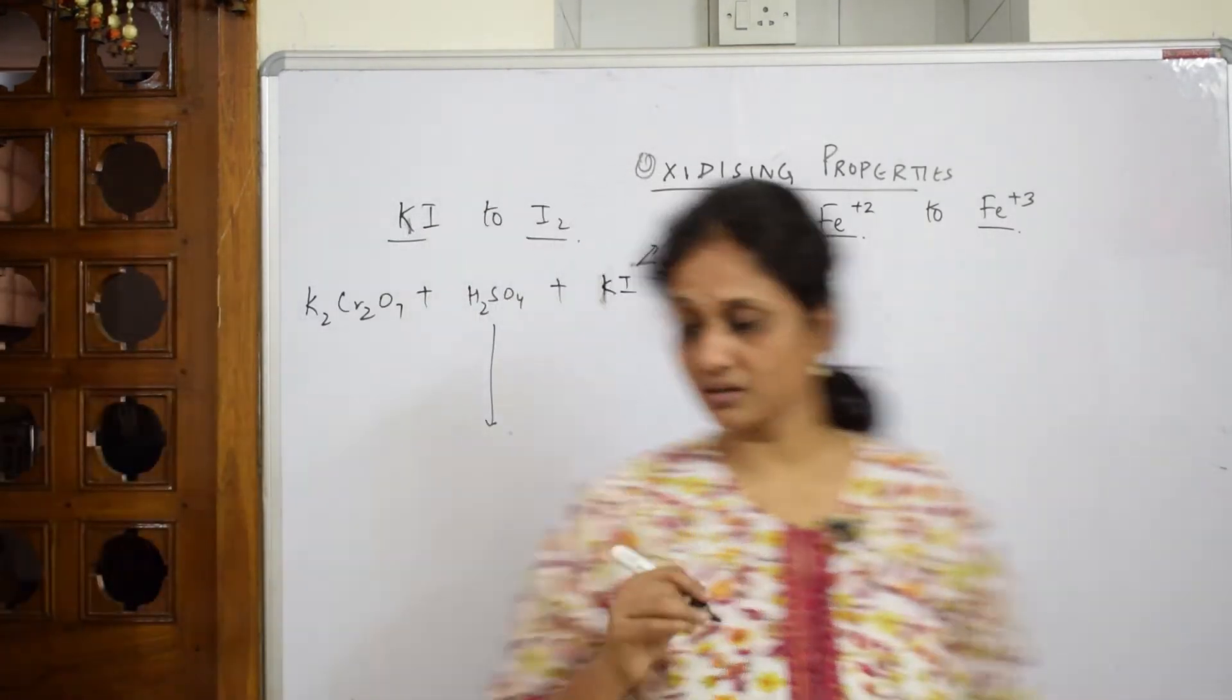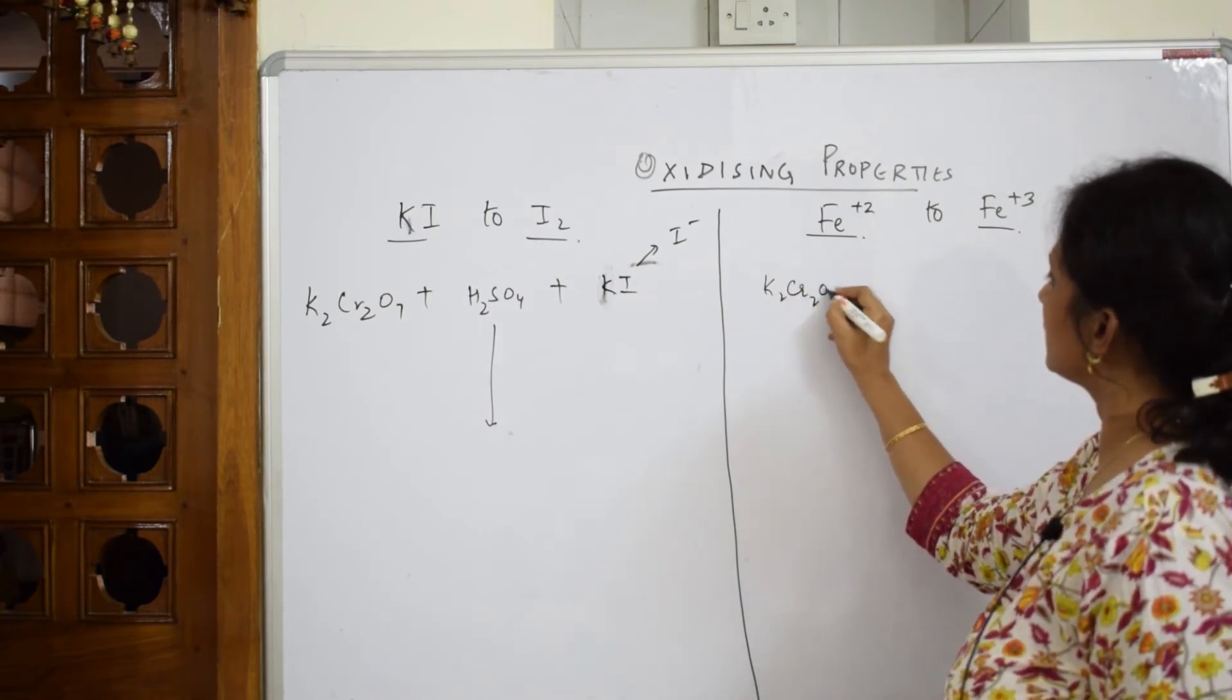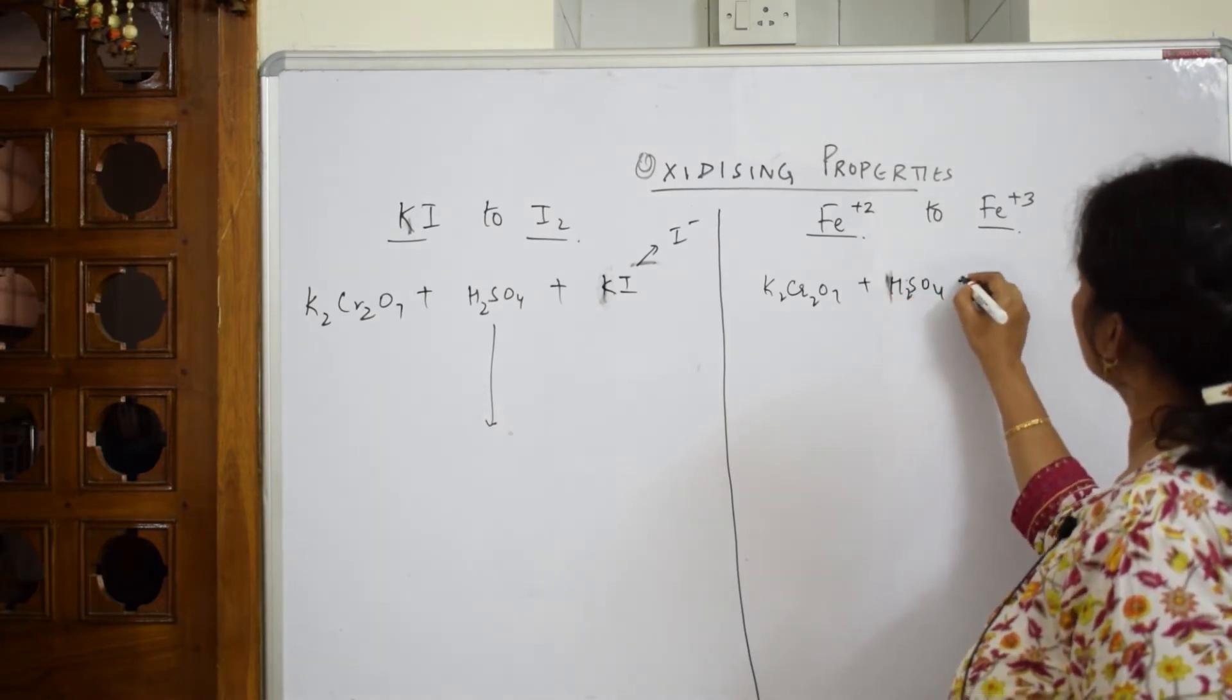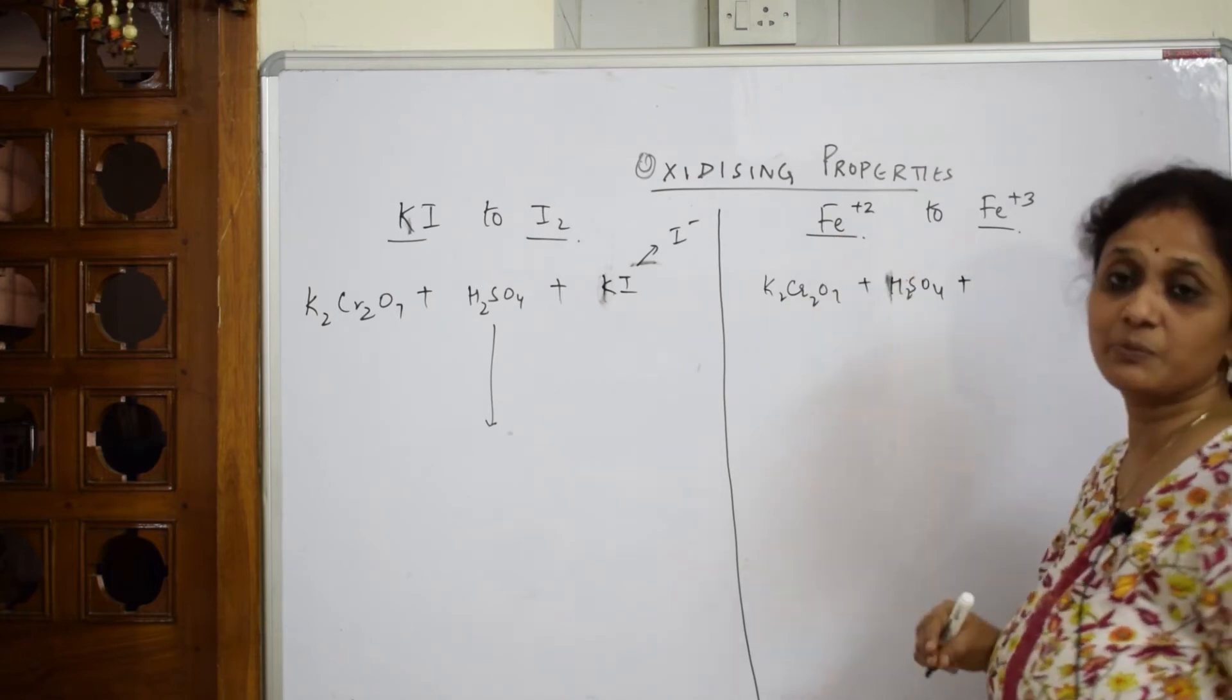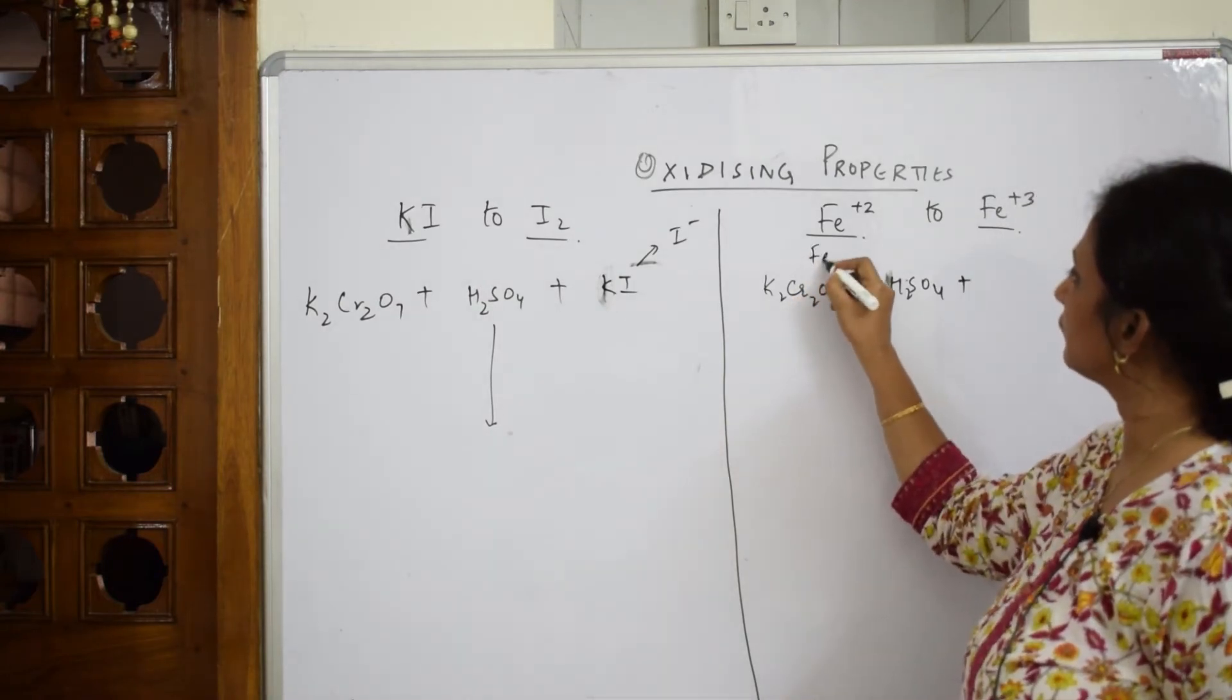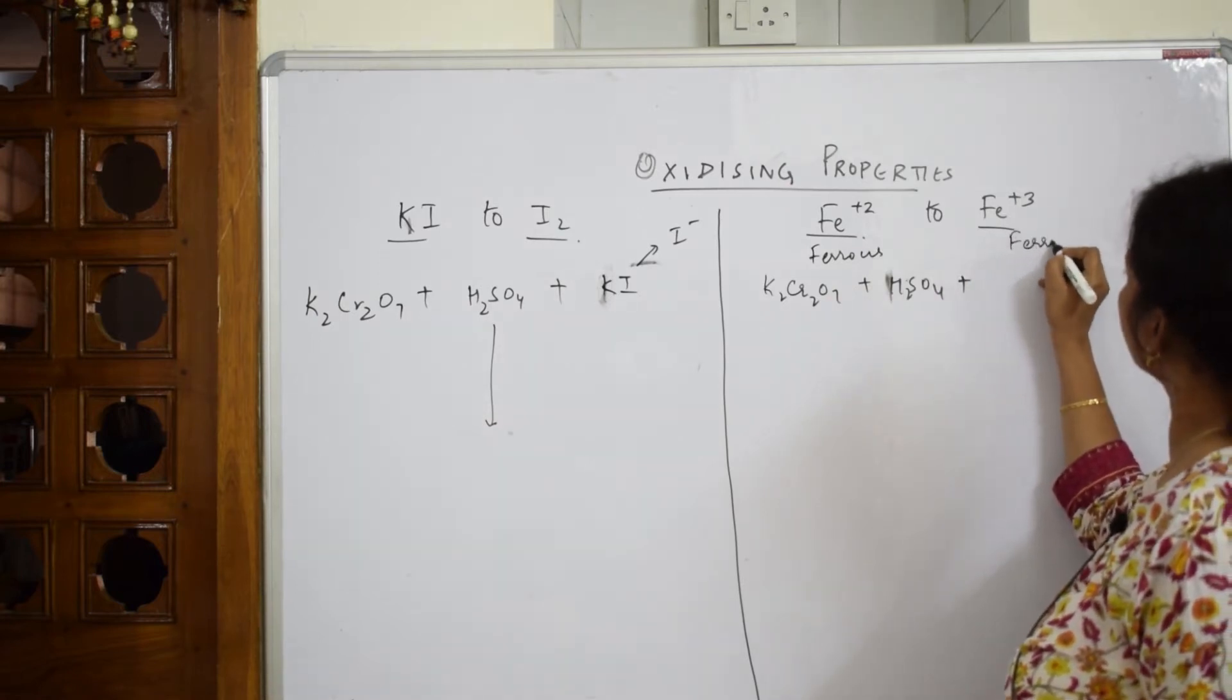Let me write this one here. I'm again going to take K2Cr2O7, I'm going to take concentrated sulfuric acid. Plus here, what is my task? My task is to convert what is this: Fe2+ is ferrous, Fe3+ is ferric, right? Fe2+ is ferrous, Fe3+ is ferric.